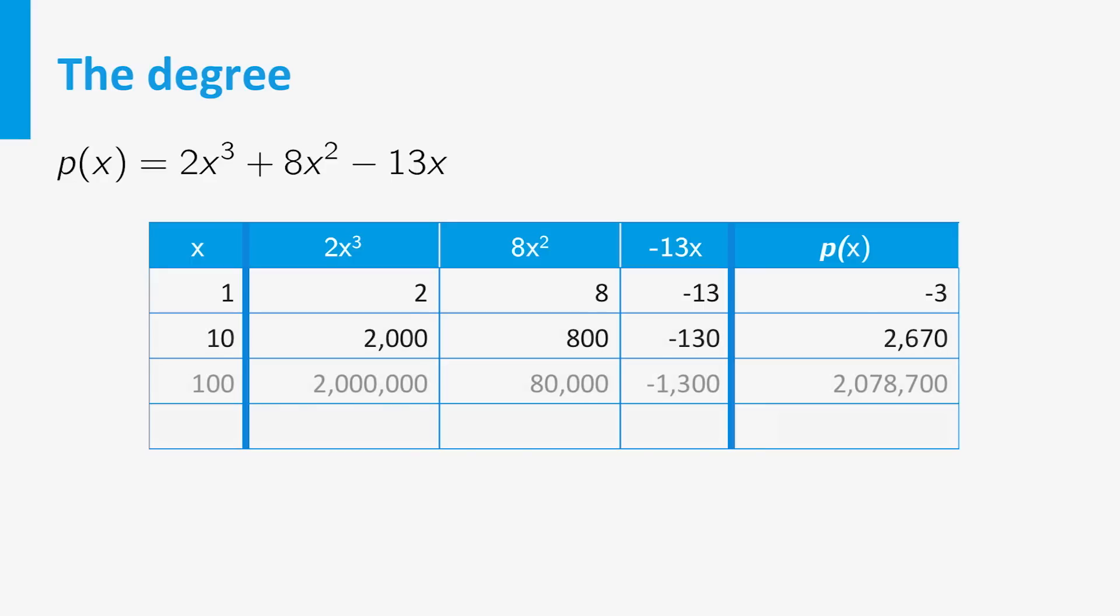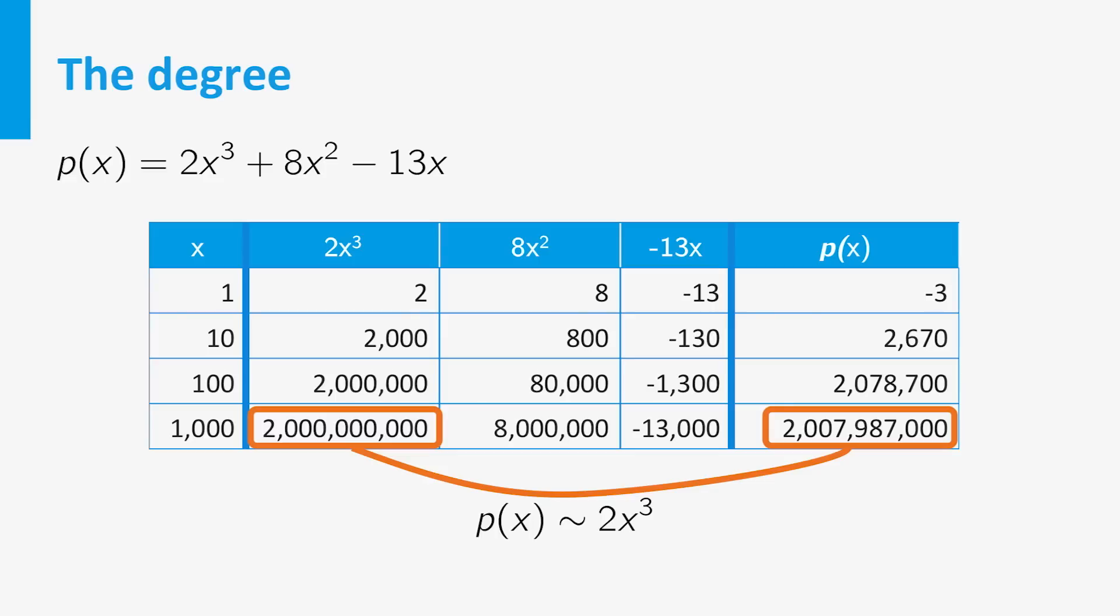You can see in the table that as x grows larger, the first term grows faster. For x very large, the first term will be much larger than the other terms. So then, the function roughly behaves as 2 times x cubed, which is a power function. That is, the relative difference becomes very small.